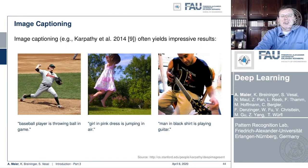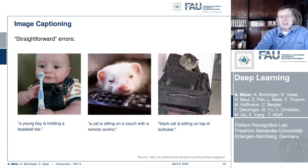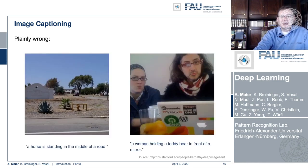Let's magnify this a bit and look at some errors. Here on the left you can see this is clearly not a baseball bat. Also, this isn't a cat in the center image, and there are slight errors like on the right-hand side — the cat on top of the suitcases isn't black. Sometimes there are even plain errors: in the left image I don't see a horse in the middle of the road, and in the right image there's no woman holding a teddy bear in front of a mirror.